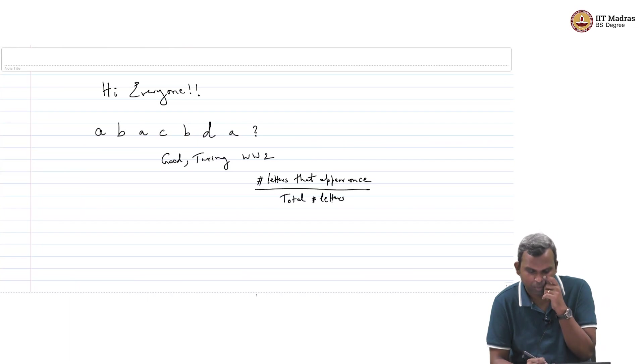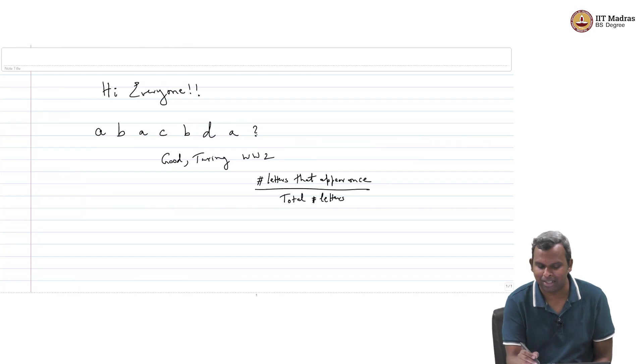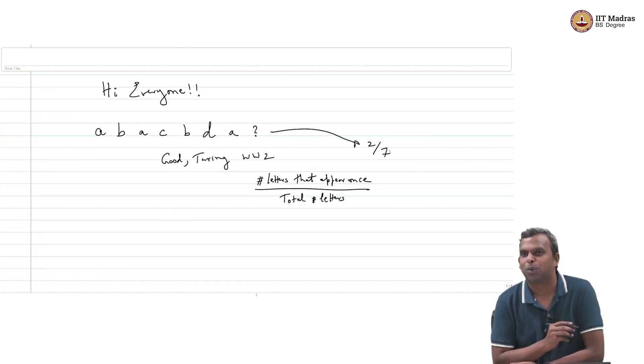The estimator that they came up with is number of letters that appear once, appear exactly once, okay, divided by total number of letters. So in this case total number of letters you saw so far is 7, denominator is the easiest thing to calculate. Numerator is also not that hard but maybe you need to stare at it for a little while. So what would be the numerator. So far there is only 1, I think there is 2, right, C and D are there, so this for this example ends up being 2 by 7, okay.